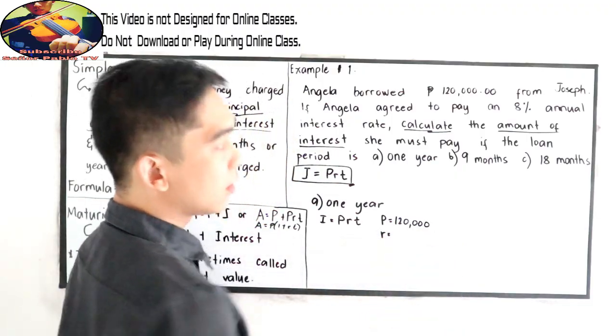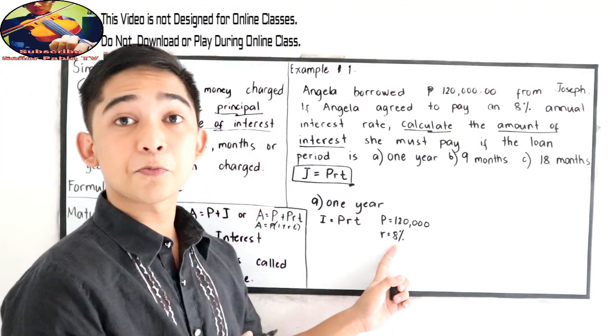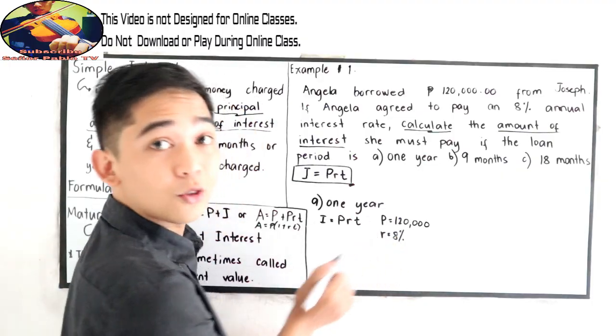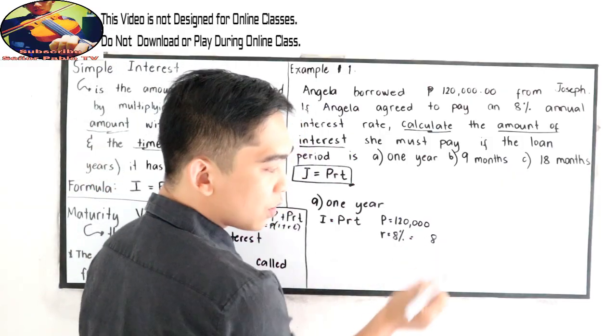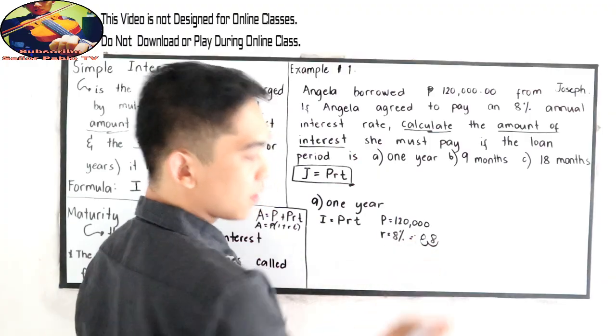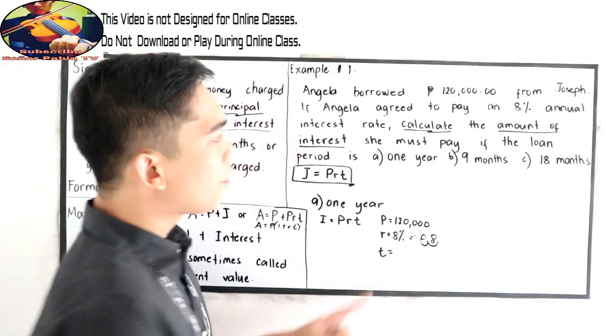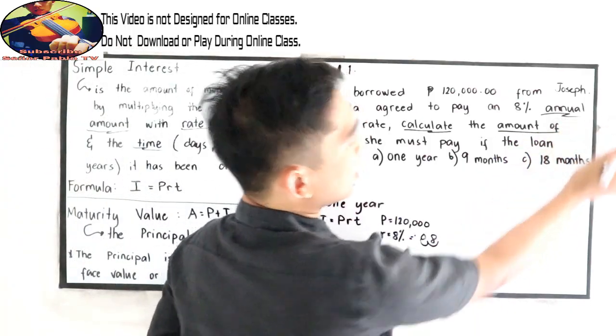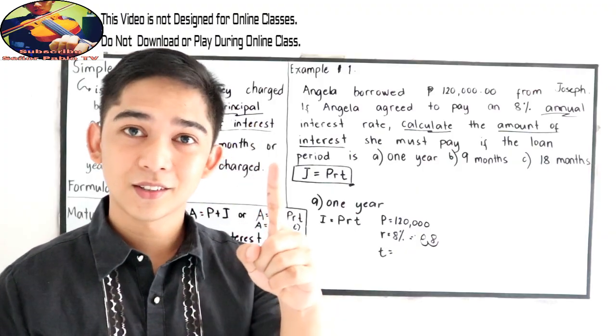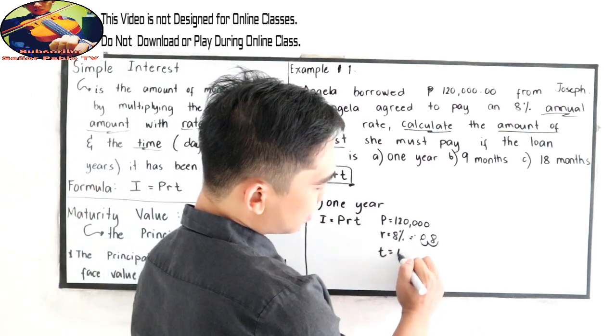Our rate is 8%. So we're going to write 8%. We need to convert this percent into decimal. So 8%. So we're just going to move 2 decimal point to the left. So we have 8 here. We know that the point is located here on the rightmost part. Move 2 decimal. 1, 2. So that is 0.08.